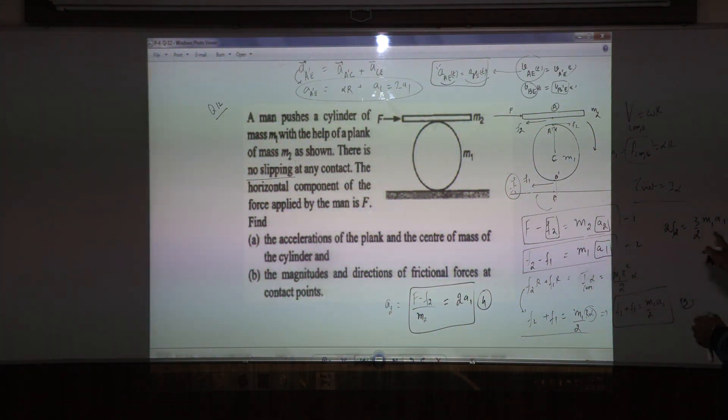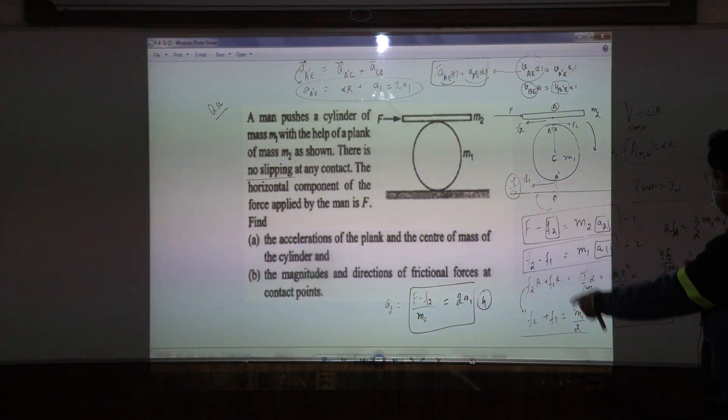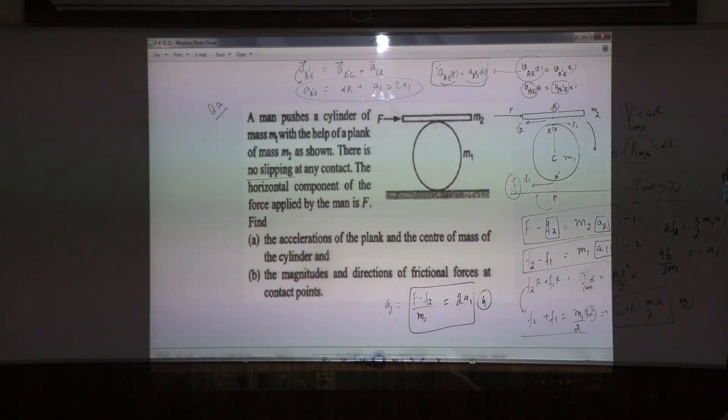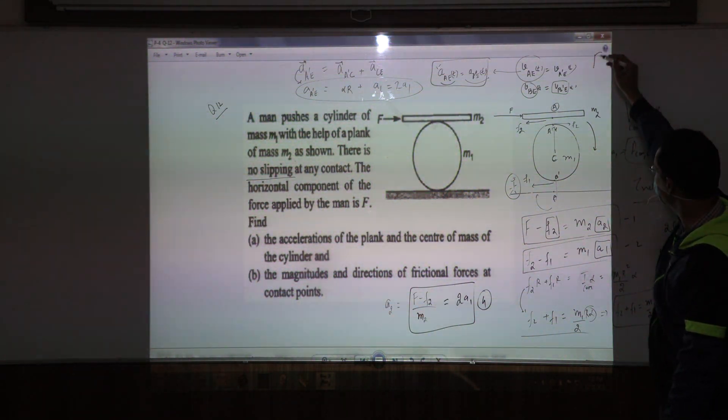So how do we do that? Let us calculate the value of A1 from here. A1 is 4F2 divided by 3M1. And let us substitute this value of A1 in that equation. So let us call this as 5. From 5 putting in 4, what do we get? I will just continue here.